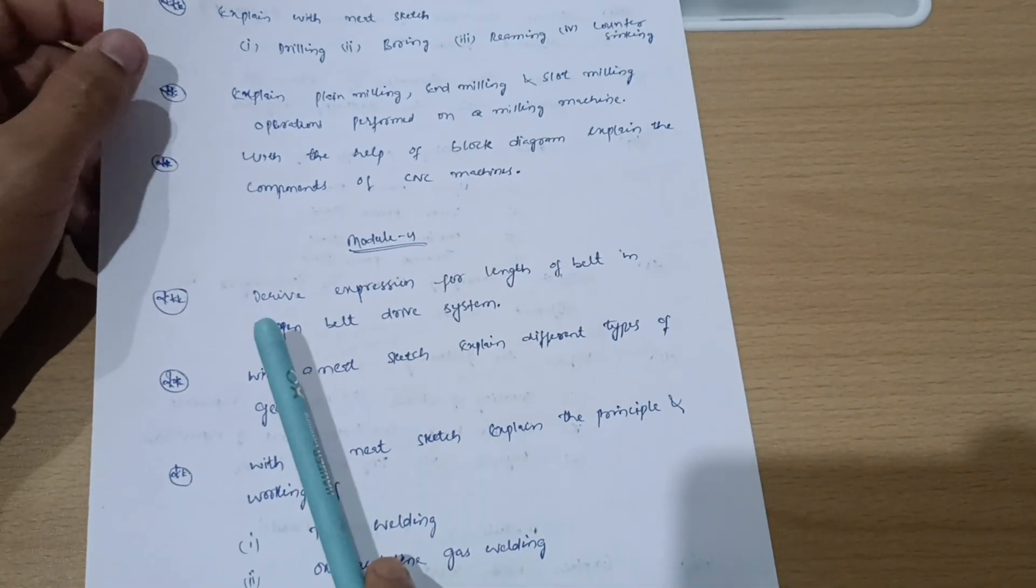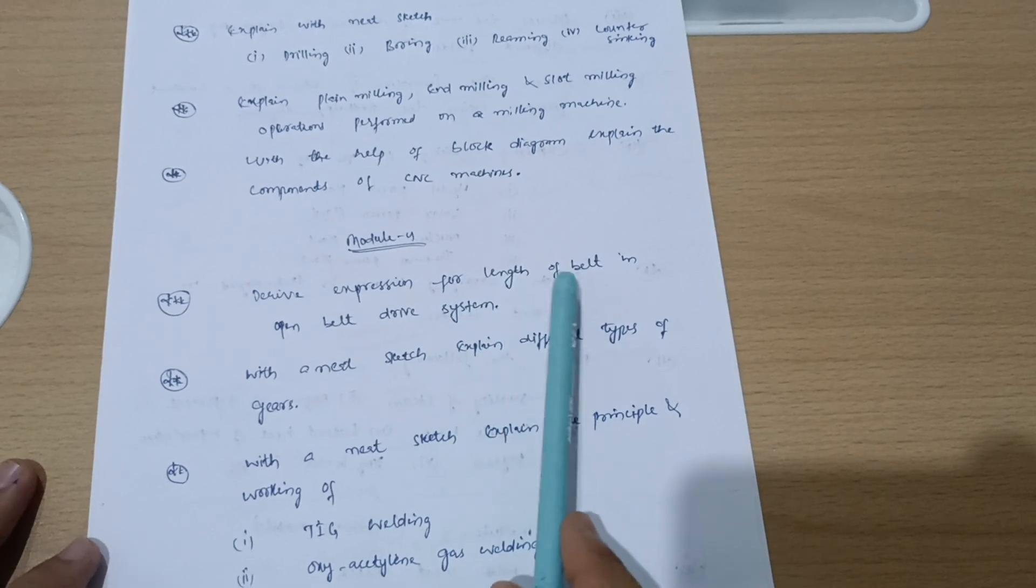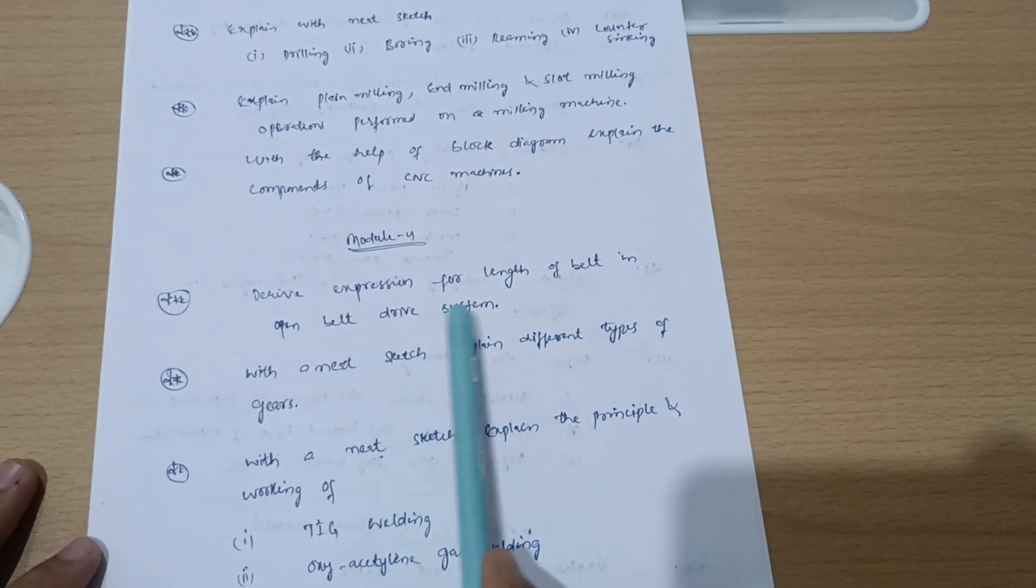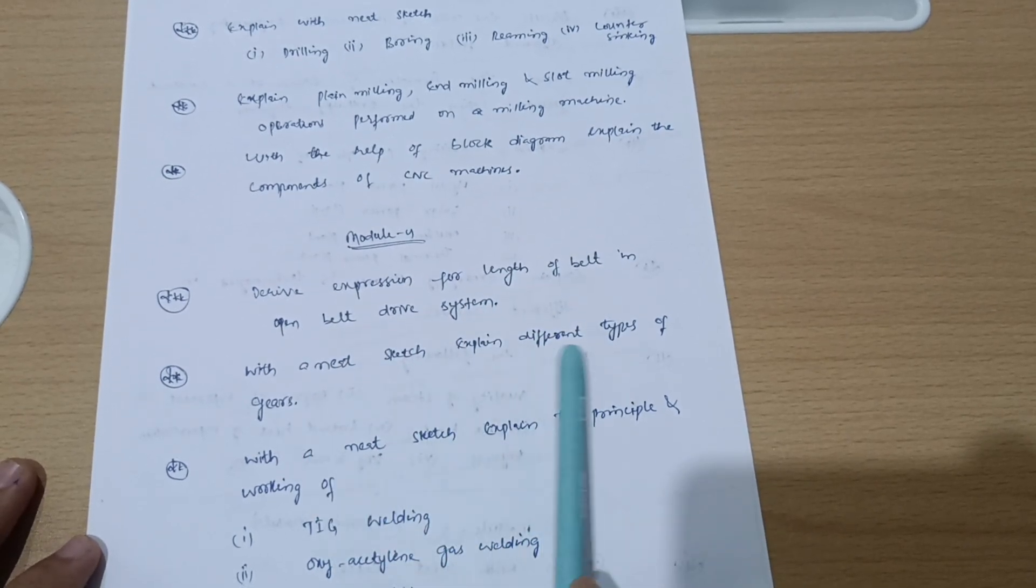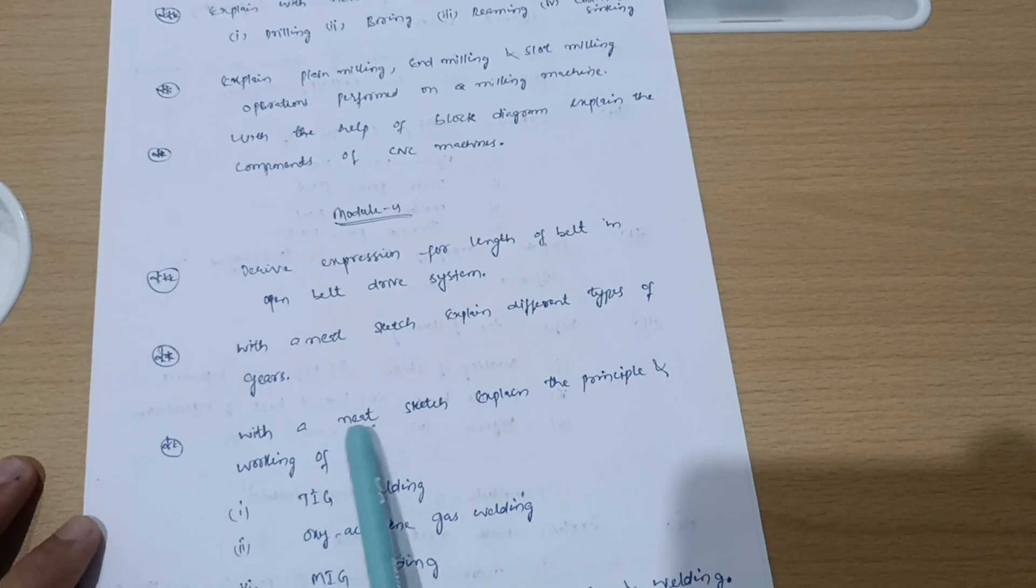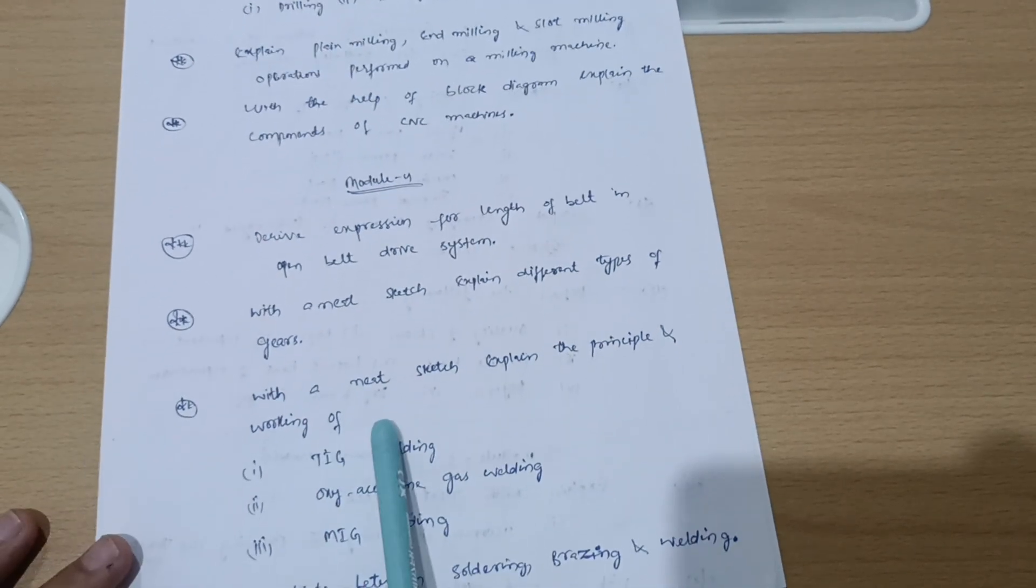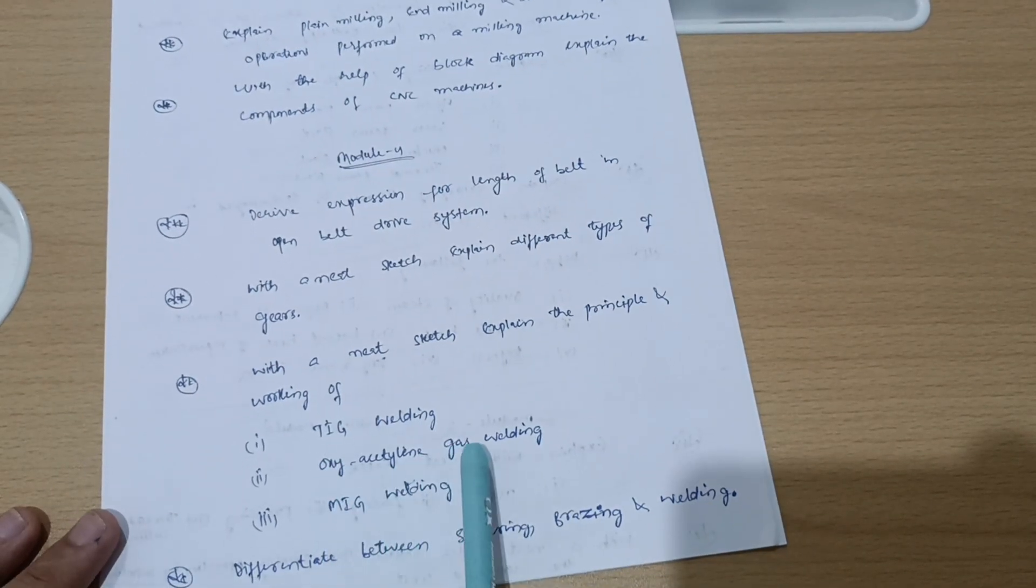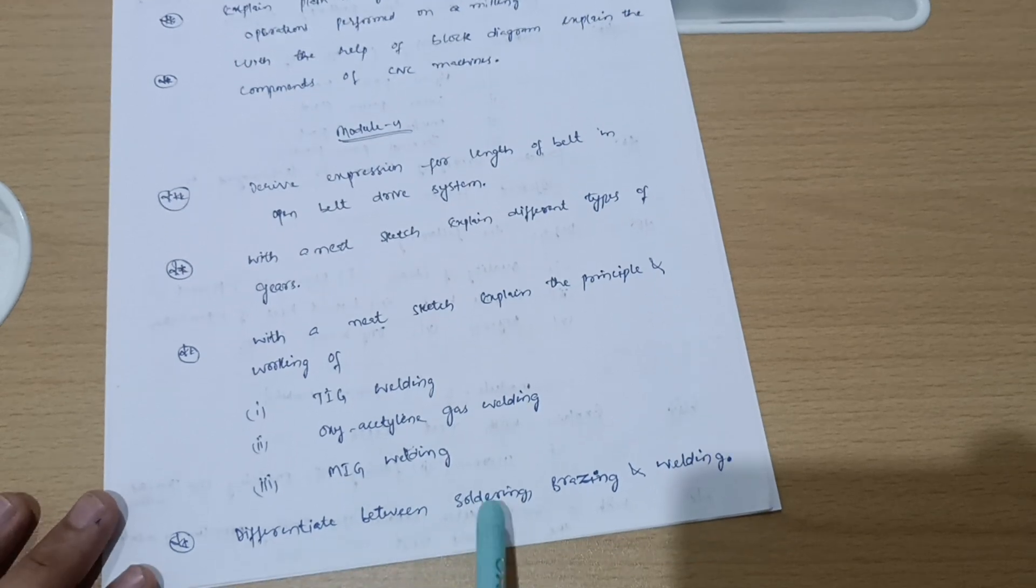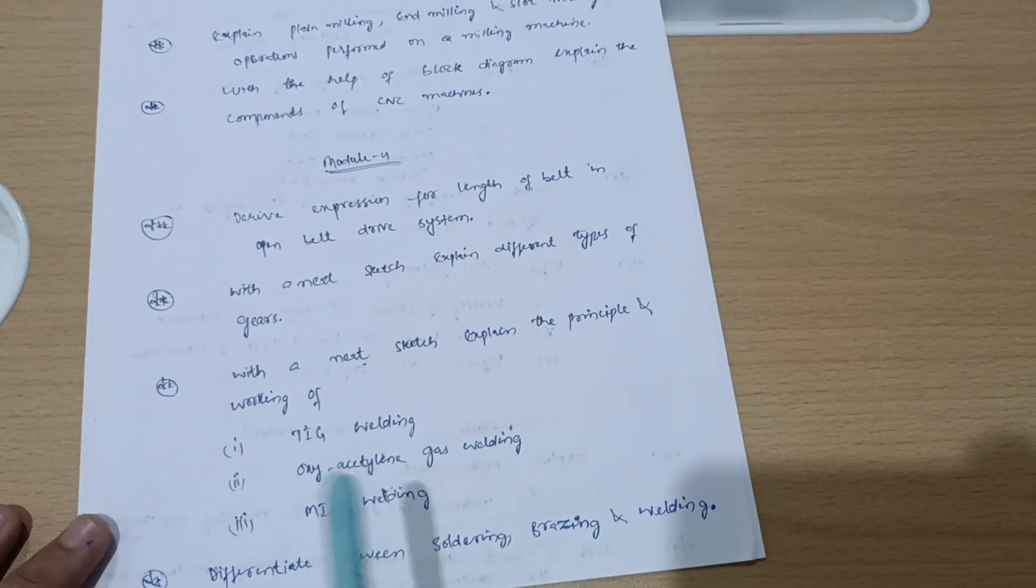Next we will come up to module four, in which you have to cover the super important question: derive expression for length of belt in open belt drive system. With a neat sketch explain different types of gears. With a neat sketch explain the principle and working of fordig welding, oxy-acetylene gas welding, and MIG welding. Differentiate between soldering, brazing, and welding. This is all about module four, go through these important questions.